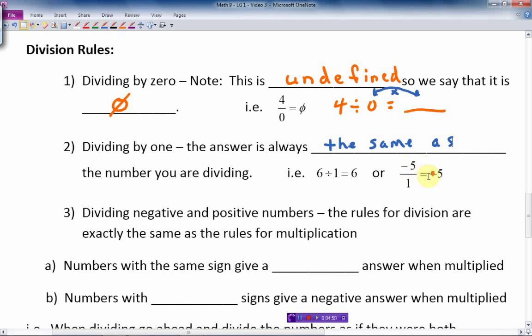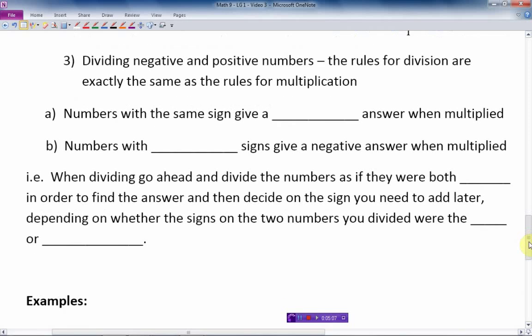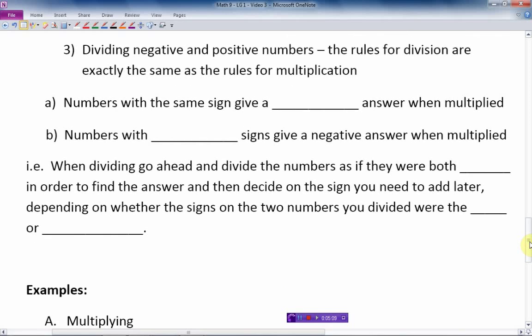Now, let's go to the dividing negative and positive numbers. The rules of division are exactly the same as that as multiplication, which is very convenient. Numbers with the same sign give a positive answer when multiplied. Numbers with different or opposite signs give a negative answer when multiplied.